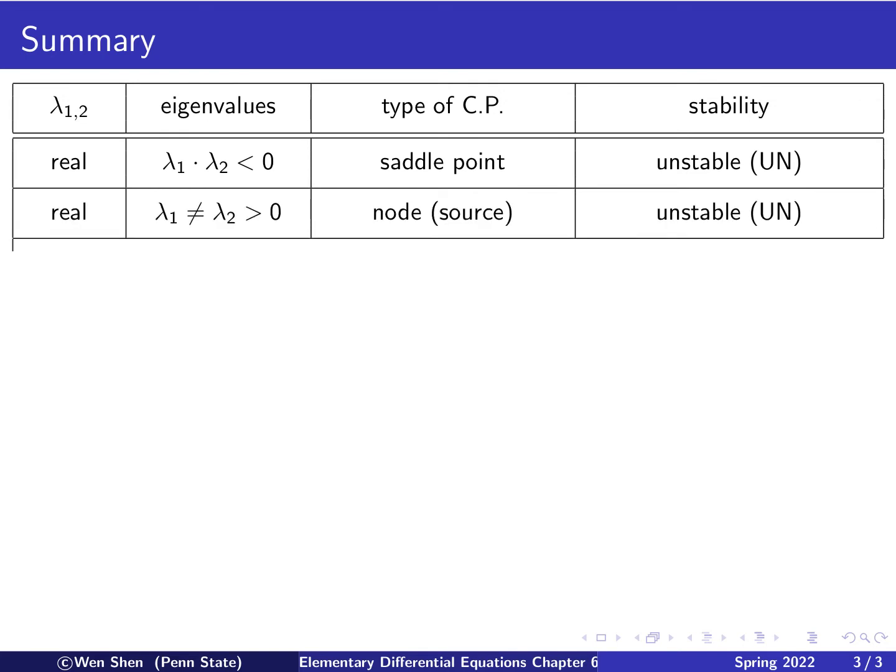The second case is still real for the two eigenvalues, and they are distinct, but they are both bigger than zero. The critical point is called a node, and it's also called a source. Such a critical point is unstable, because all arrows are pointing away from the origin.